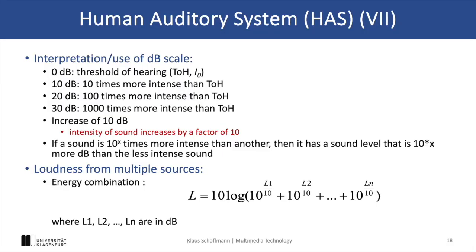Finally, let's look at the interpretation and use of the decibel scale. Every 10 dB increase represents a 10-fold increase in sound intensity. For example, a sound that is 30 dB louder than another is 1000 times more intense. We can also combine the loudness of multiple sound sources using an energy combination formula, which helps us understand how sound levels add up in real-world situations — computed as 10 times the log of the sum over all n sound sources, where each source is represented by 10 to the power of its corresponding intensity divided by 10.